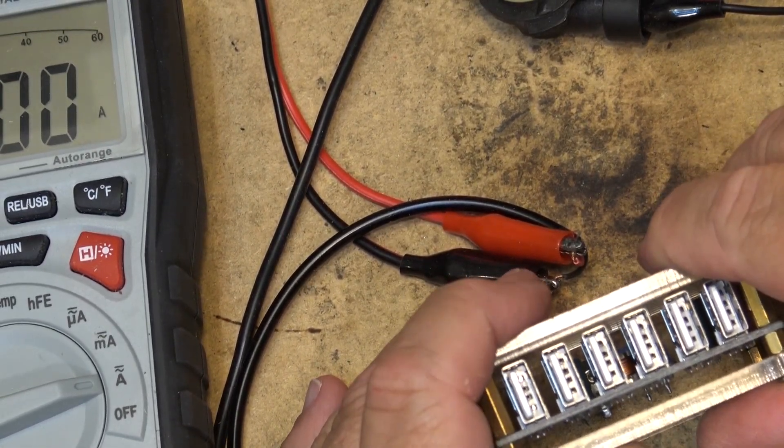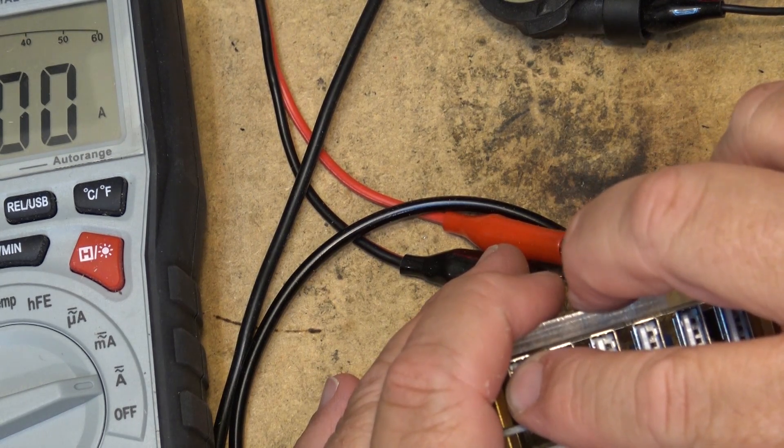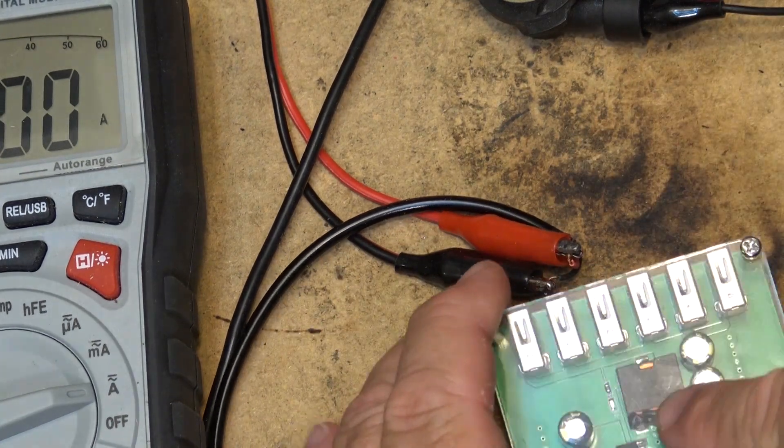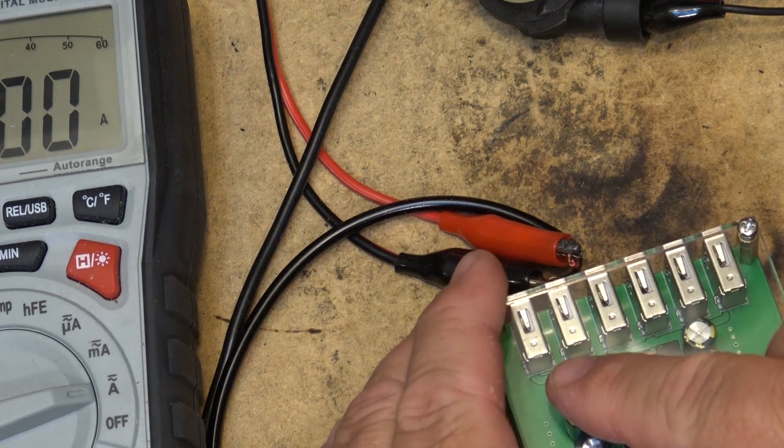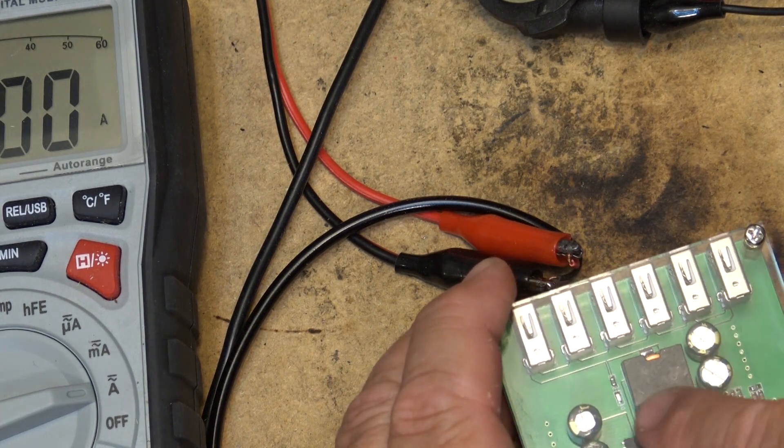So keep that in mind. You don't want to draw 8 amps from one port, but it certainly can put out that kind of power because, as you'll see here, here's your buck converter, and as you can see, all the ports are just driven in parallel with each other.